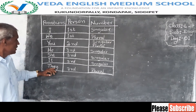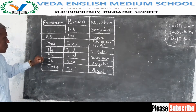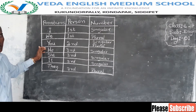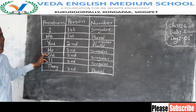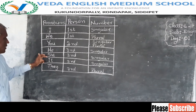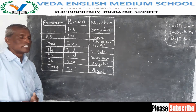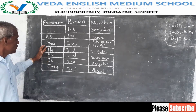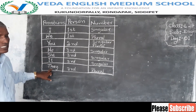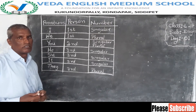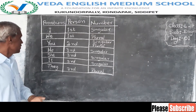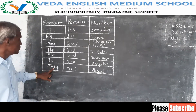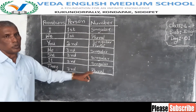Here we need to note: we use he for male, she for female, and it for neutral gender. Whereas we use they for all — maybe male, female, or neutral — anything. That's why we use they as plural.